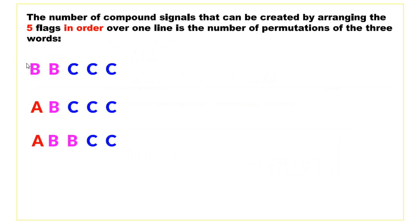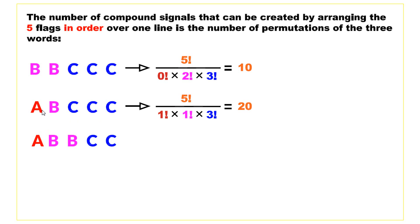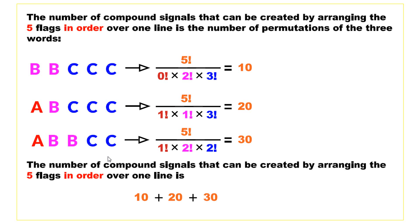We compute the number of permutations for each sequence. For the first sequence (B,B,C,C,C): 5! divided by (0! × 2! × 3!) = 10. For the second sequence (A,B,C,C,C): 5! divided by (1! × 1! × 3!) = 20. For the third sequence (A,B,B,C,C): 5! divided by (1! × 2! × 2!) = 30. Adding them: 10 + 20 + 30 = 60 signals.